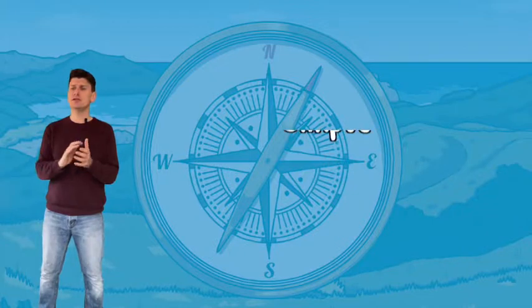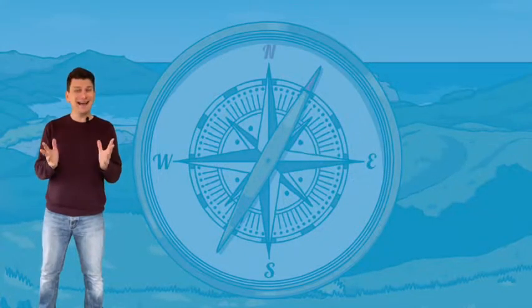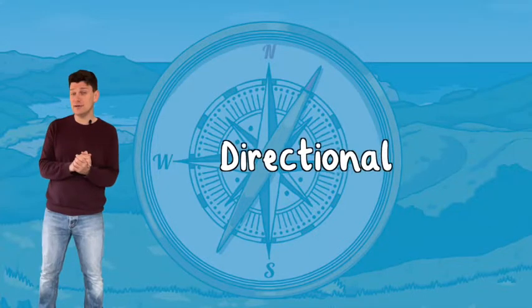In Key Stage 1, children must learn how to use simple compass directions—North, South, East and West—and locational and directional language to describe the location of features and routes on a map.